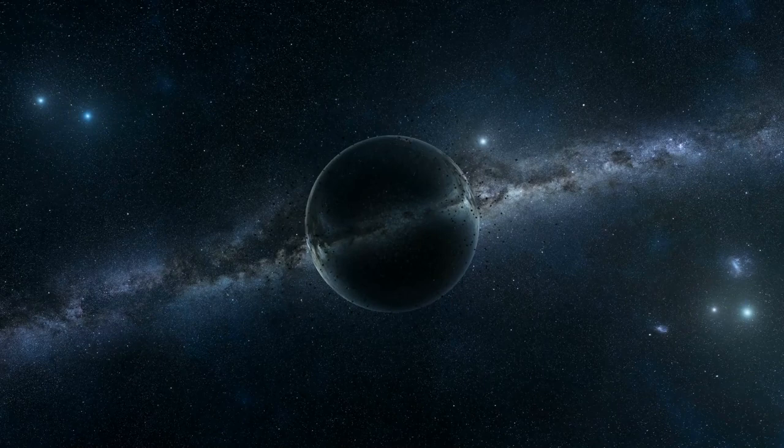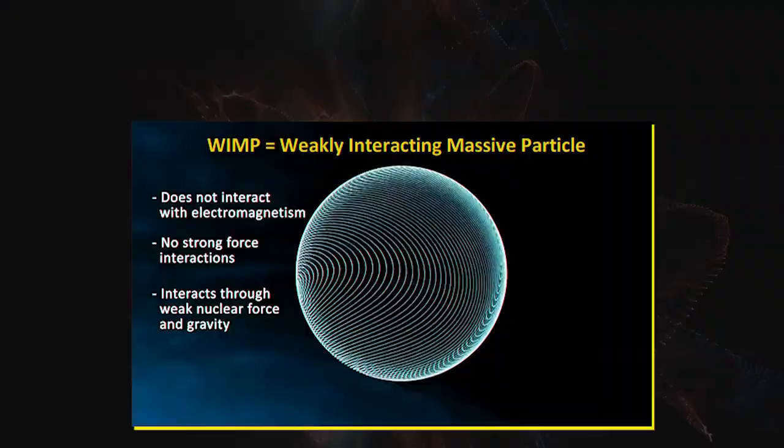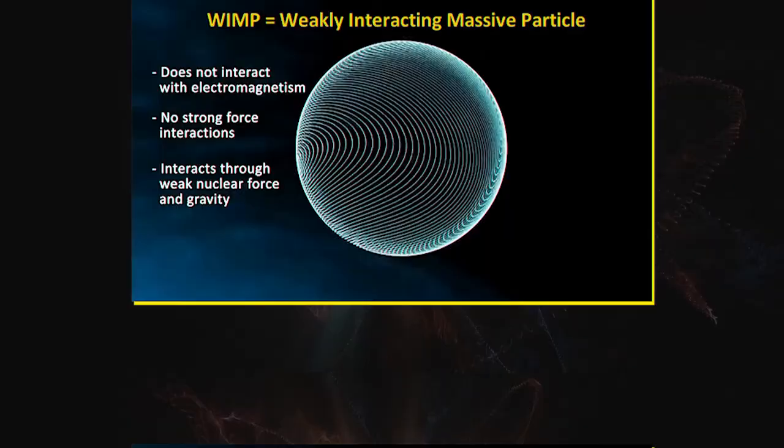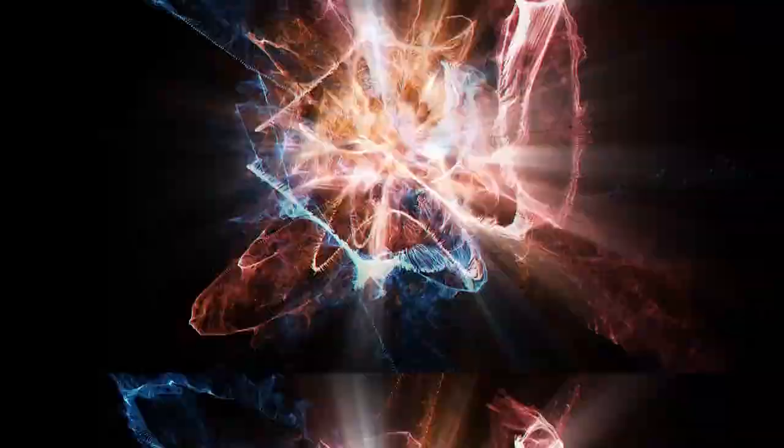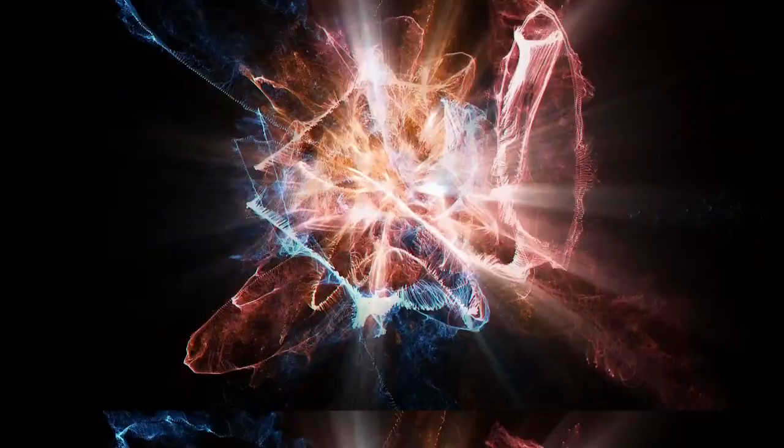The term weakly interacting massive particles refers to hypothetical particles that are huge, move slowly, and are heavy. These particles are used to explain dark matter in a number of particle physics models because they are thought to pull on conventional matter via gravity.